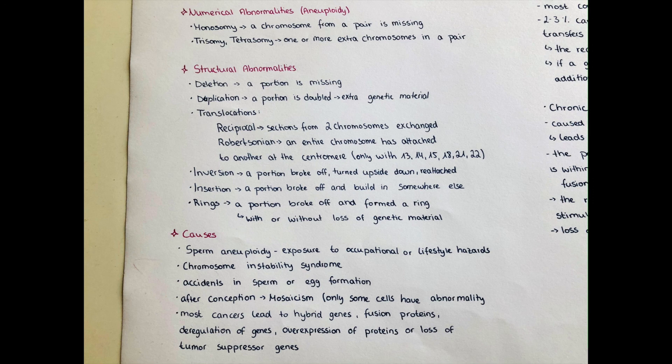Then there is chromosome instability syndrome, which is a group of disorders characterized by chromosomal instability and breakage, increasing the tendency of developing certain malignancies. Most chromosome mutations happen as a result of an accident in sperm or egg formation. Chromosome mutations can also happen after conception — then we call them mosaicism, where only some of the cells carry the abnormality.